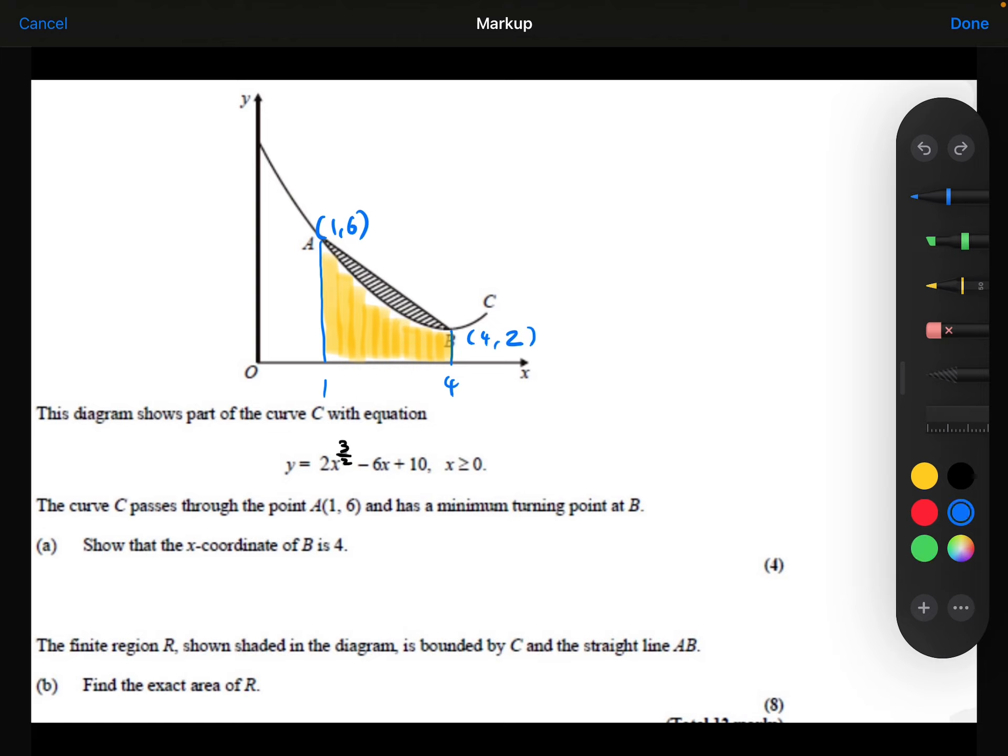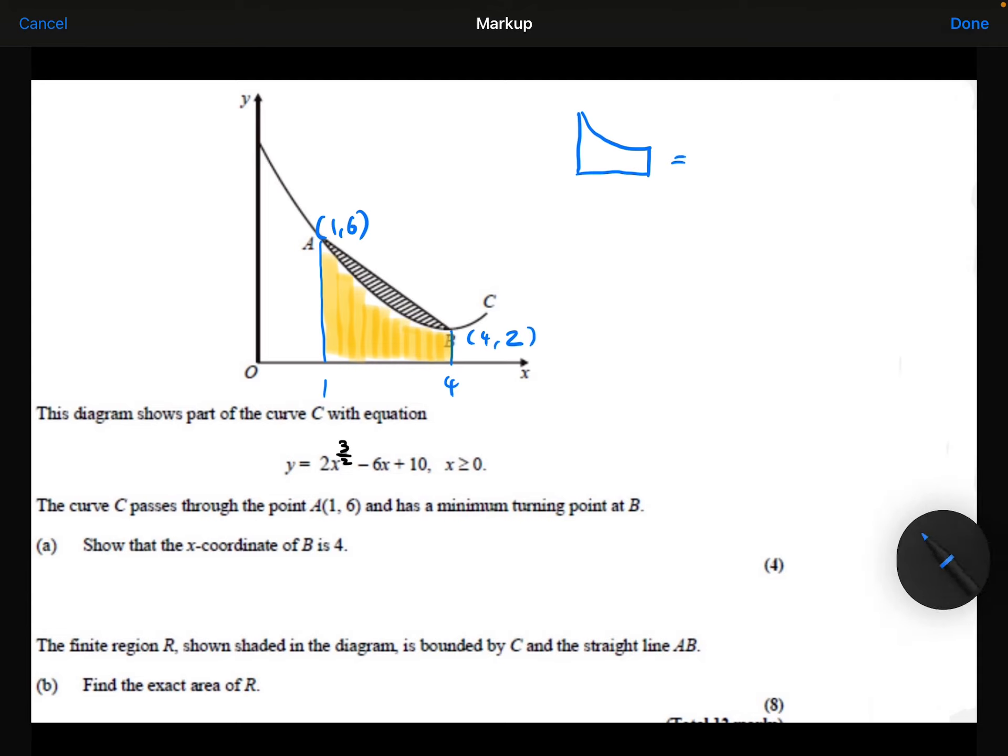So let's do that, let's find that yellow area first of all. By integrating between 1 and 4, my curve 2x to the power of 3 over 2 minus 6x plus 10 with respect to x.